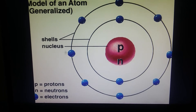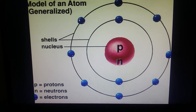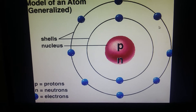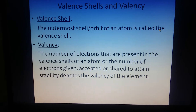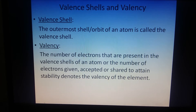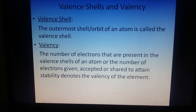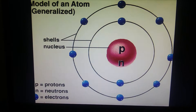The outermost shell is the valency shell, and the number of electrons in the outermost shell is the valency. The outermost shell of an atom is called the valence shell, and the number of electrons present in the valence shell is the valency of the element.